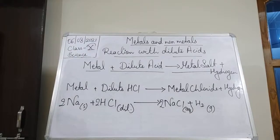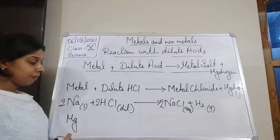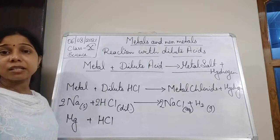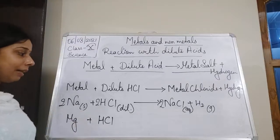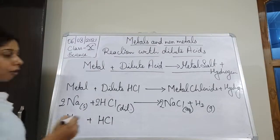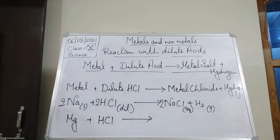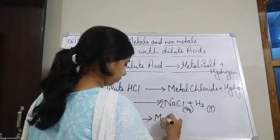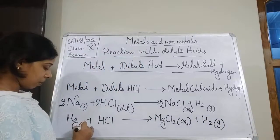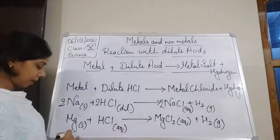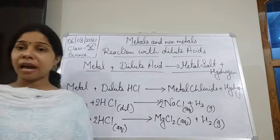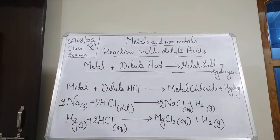The second one is magnesium. Magnesium also reacts very fast, but it is not as vigorous or violent as sodium. Magnesium reacts with hydrochloric acid (aqueous) to form MgCl₂ (magnesium chloride) and hydrogen gas is released. Balancing: we write 2HCl. Magnesium also reacts violently with hydrochloric acid, though less so than sodium.